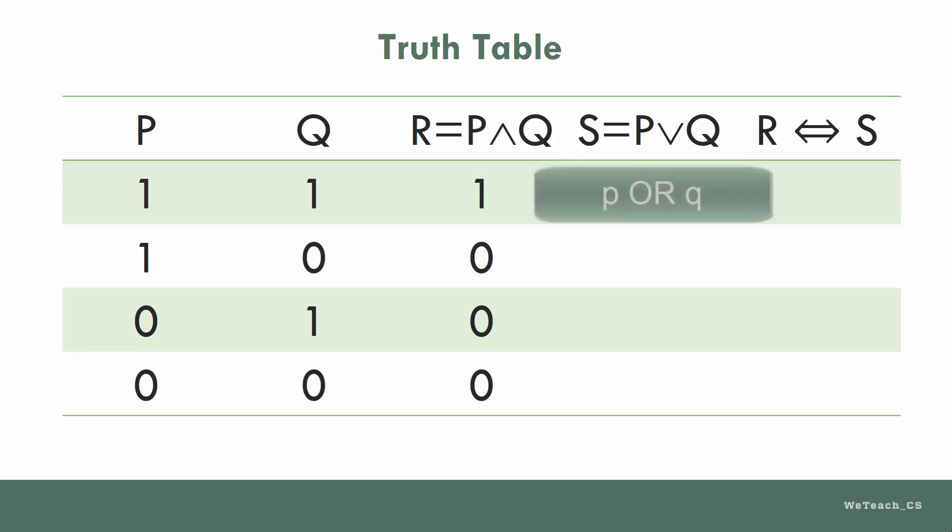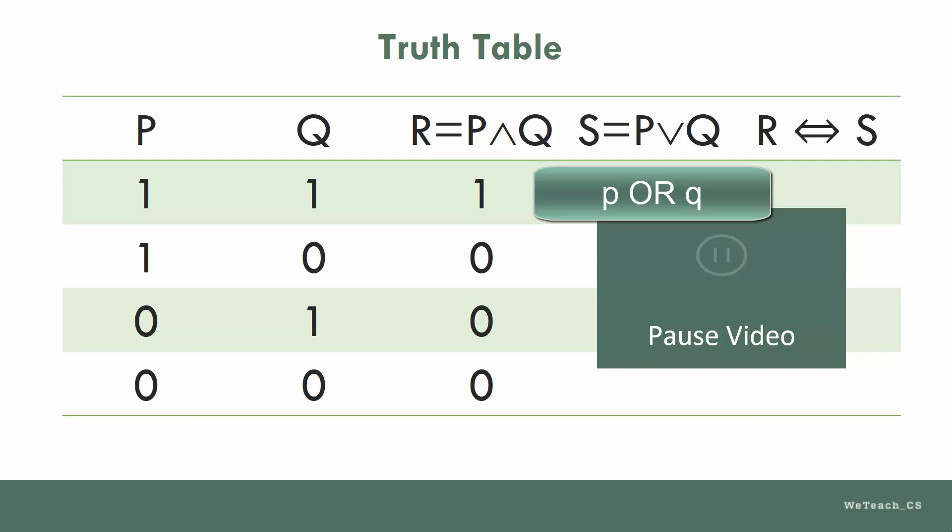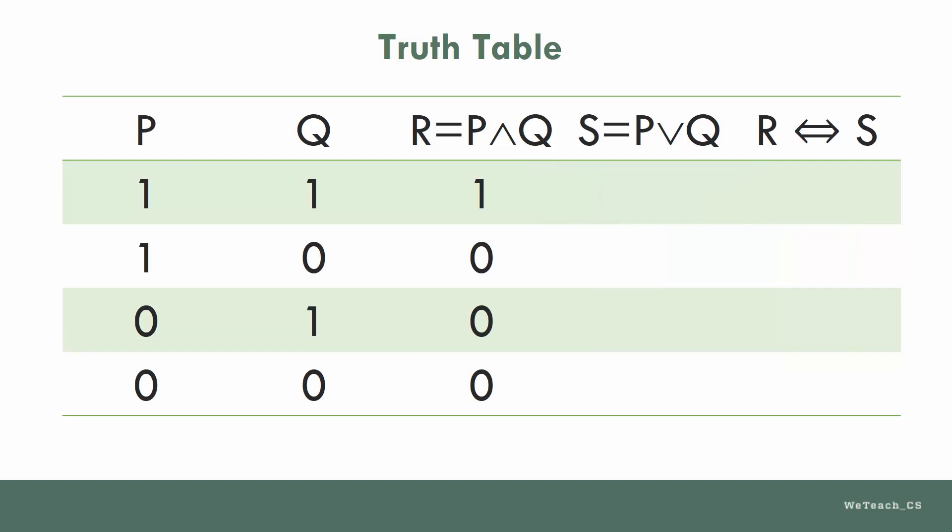Now let's evaluate the OR column. Think about it for a moment, and fill out the column on your table. Okay, let's see how you did. Since OR requires only one of the values to be true, the first three lines of this column are all true, with only the last line false, since both values are false.